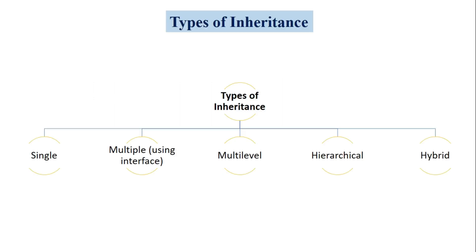Now let's see the types of inheritance in C#.NET. There are 5 types of inheritance: the first is single inheritance, then multiple inheritance, multi-level inheritance, hierarchical, and hybrid inheritance. We will see each and every type of inheritance with examples in upcoming lectures. In today's lecture we are going to learn about single inheritance and an example of single inheritance.